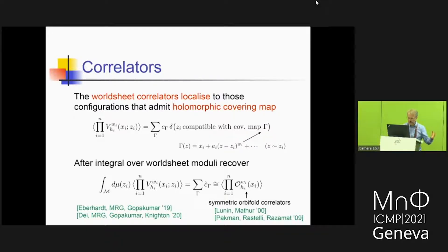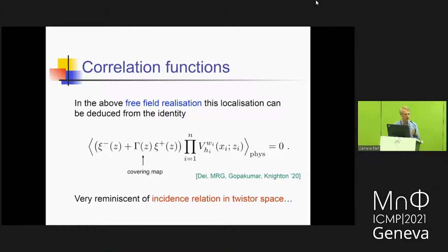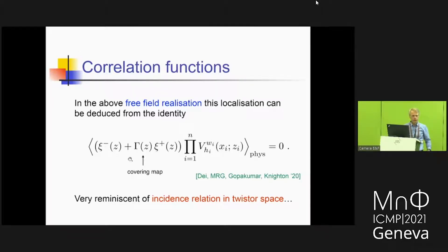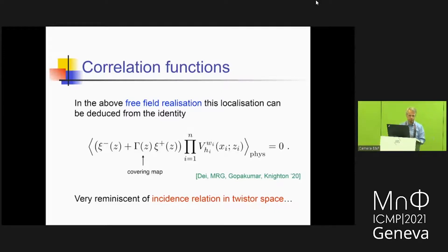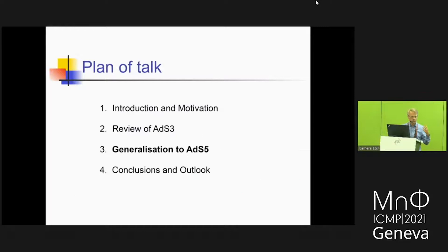In some sense you manifestly reproduce the way you calculate symmetric orbifold correlators from this world sheet perspective. This theory behaves effectively like a topological string theory in that these integrals, typically horrendously complicated to solve, simplify because of this delta function constraint and become sums over discrete covering maps. Written in terms of the free fields, this localization property looks very much like an incidence relation in twistor space — the fields look like twistor variables related by an incidence relation. This suggests that the correct way to think about this world sheet theory is that the degrees of freedom on it should be twistor variables rather than space-time variables.